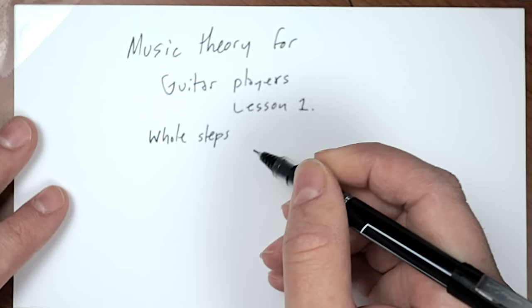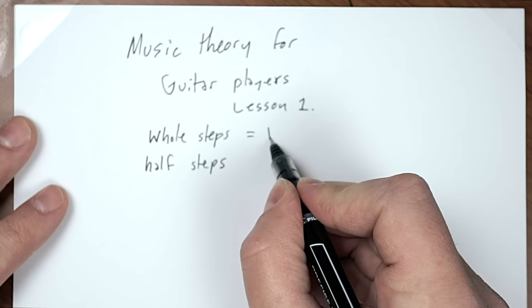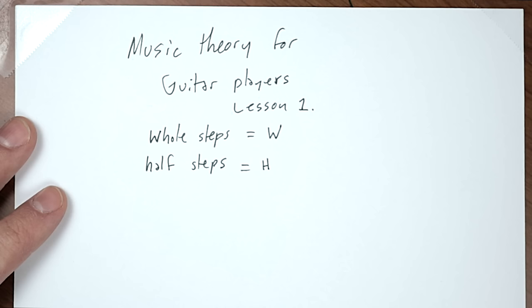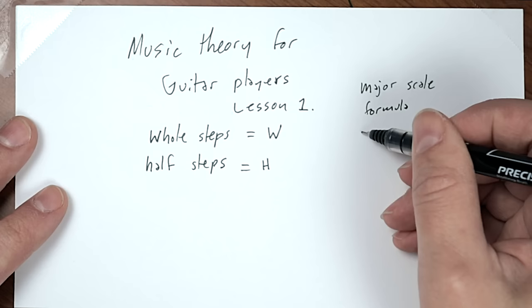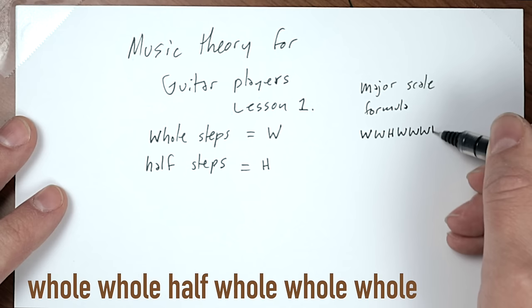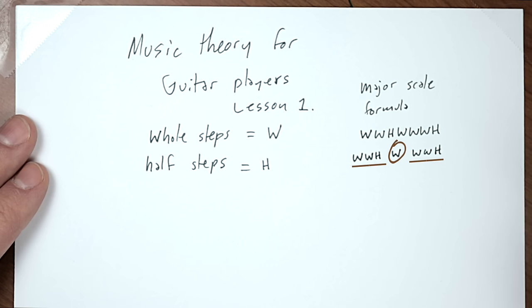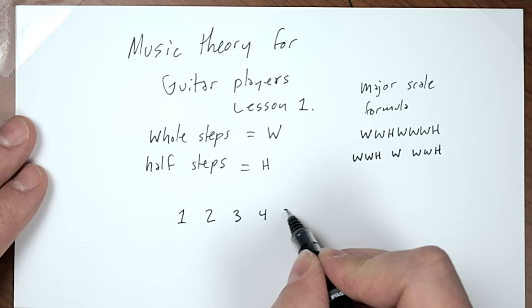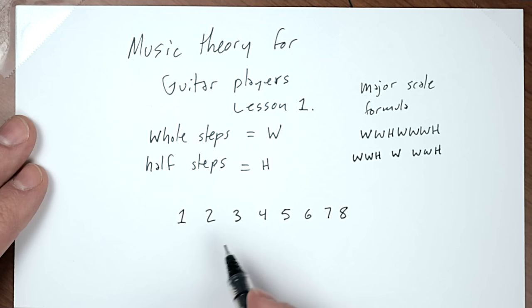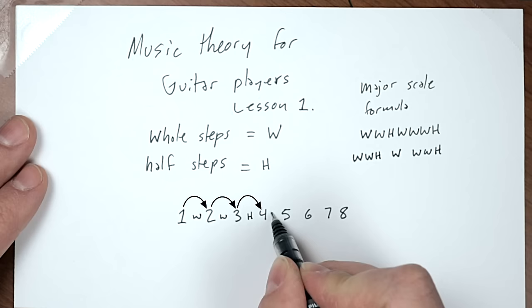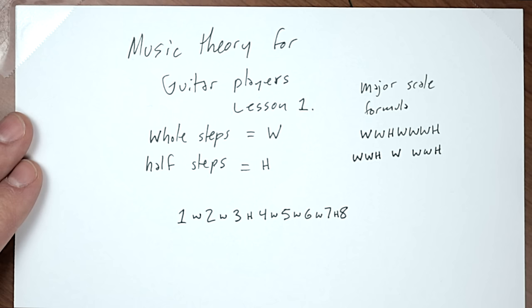The first thing to talk about is whole steps and half steps. The shorthand we'll use is W and H. The magic formula for making a major scale is: whole whole half whole whole whole half. To help memorize it, think of it as two 'whole whole half' groups separated by a whole. It's important to note that whole and half steps are names of movements between notes, not the notes themselves.